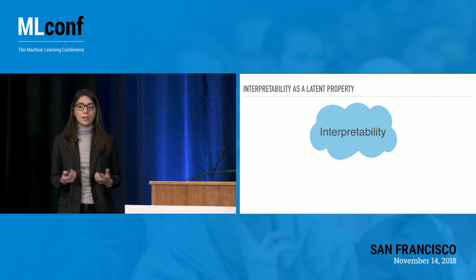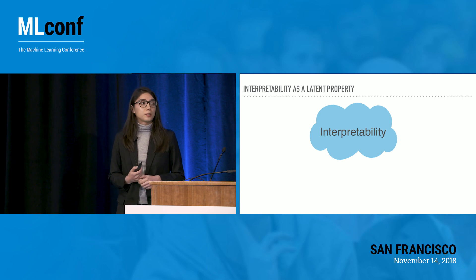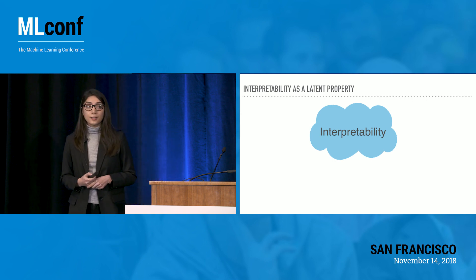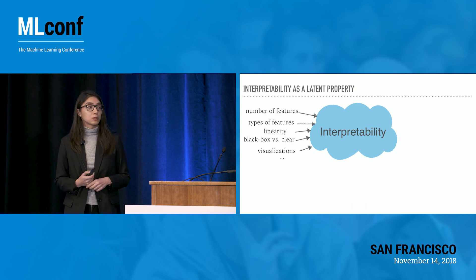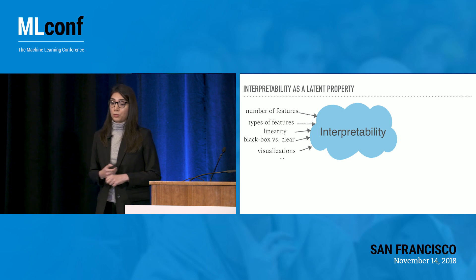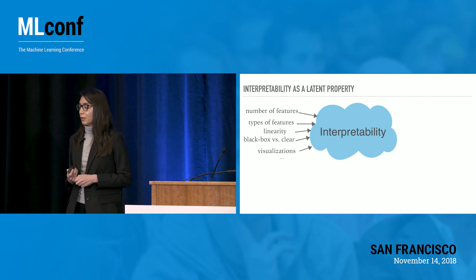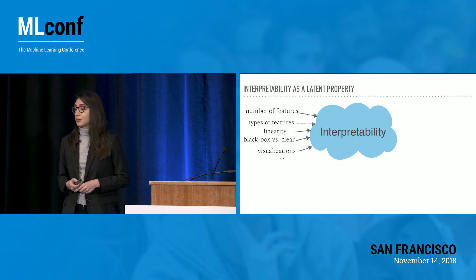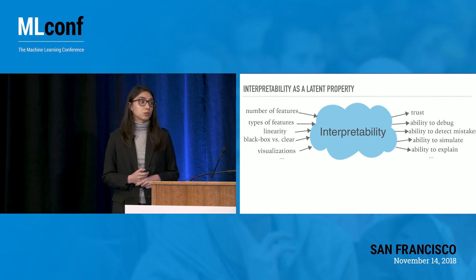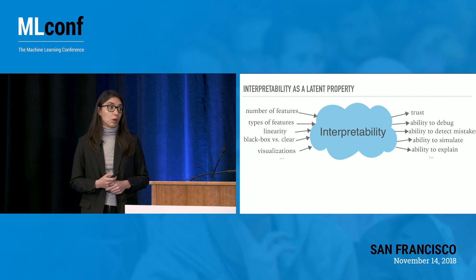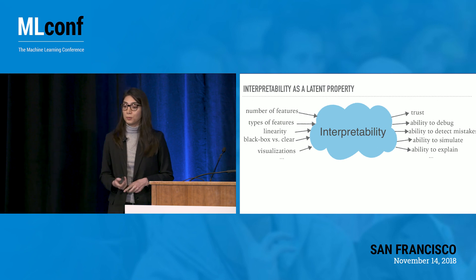When we gathered all the approaches, methodologies, and definitions proposed for interpretability in the community, we concluded that interpretability is hard to define because it is not something that can be directly manipulated or measured. Rather, it is a latent property affected by factors such as the number of features the model uses, the types of features, whether the model is clear or black box, and whether the model is linear. These in turn affect people's abilities to gain trust, debug a model, understand where it goes wrong, and simulate its predictions.